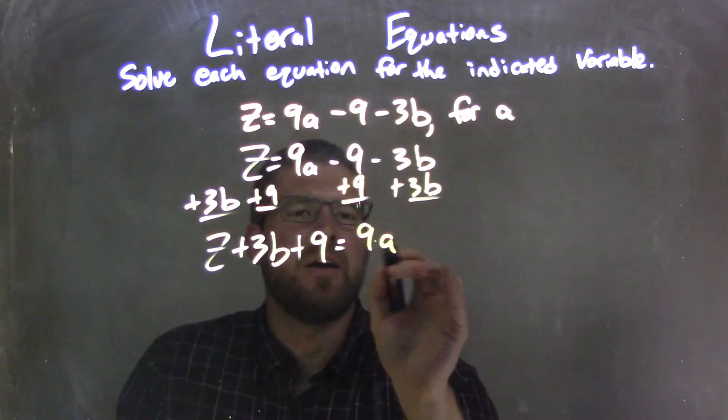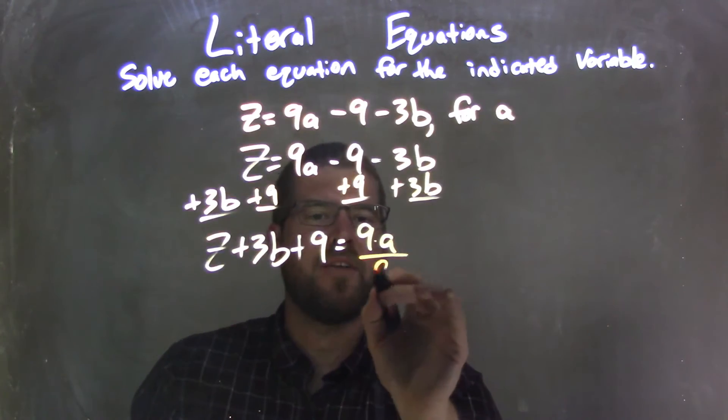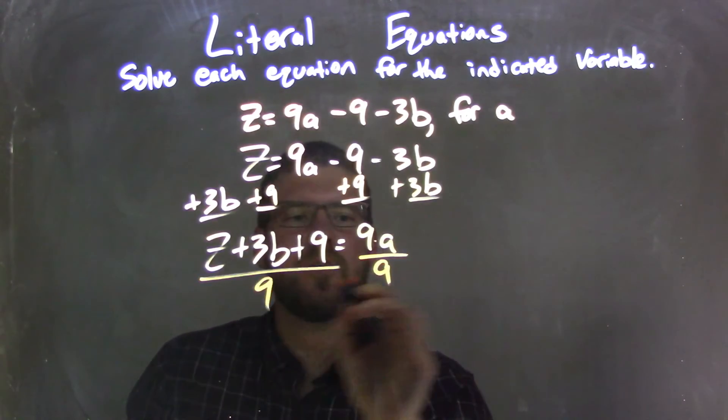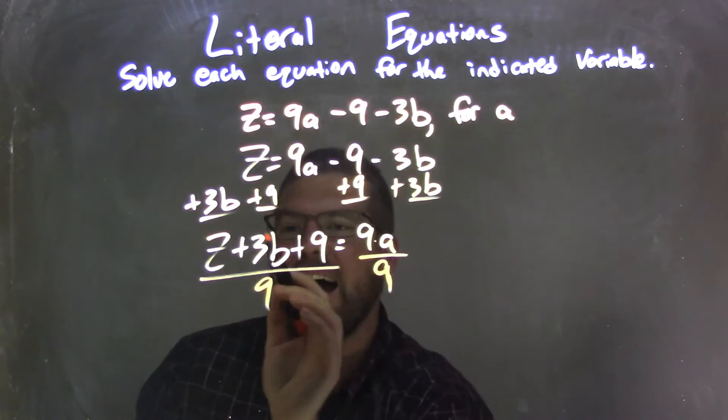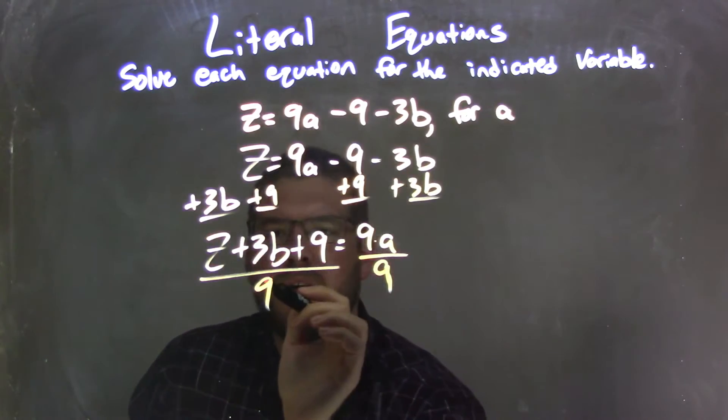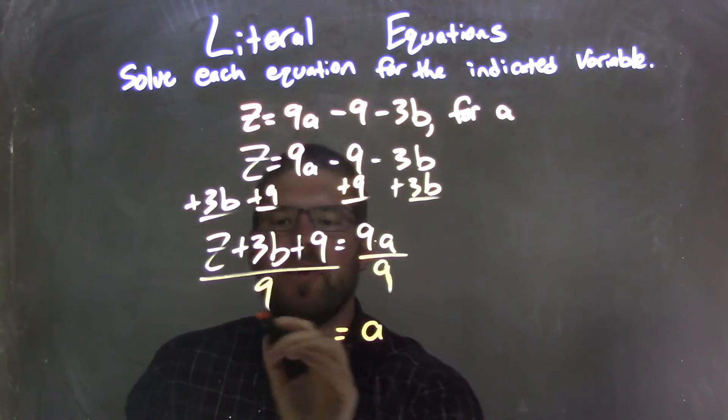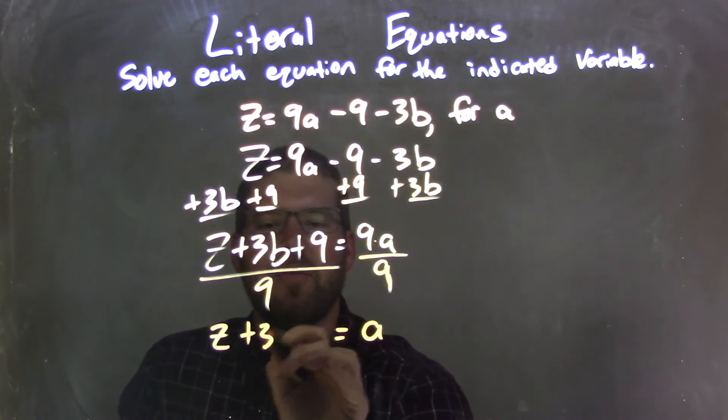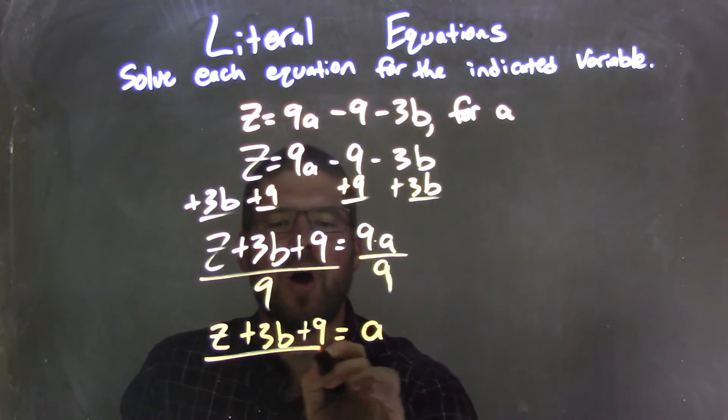Well, there's 9 times a there. The opposite of multiplication is division, so I'm going to divide by 9 to both sides. But make sure when I divide by 9 to both sides, I do it to everything that's over here. So we're left with an a by itself here, and I have z plus 3b plus 9 all over 9.